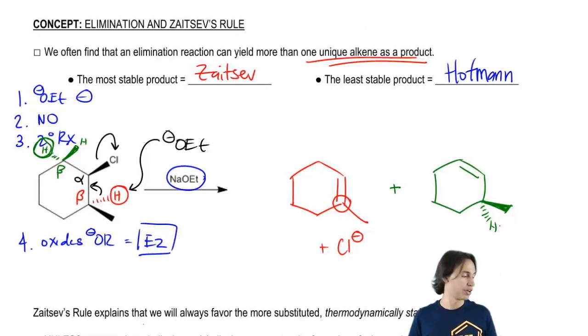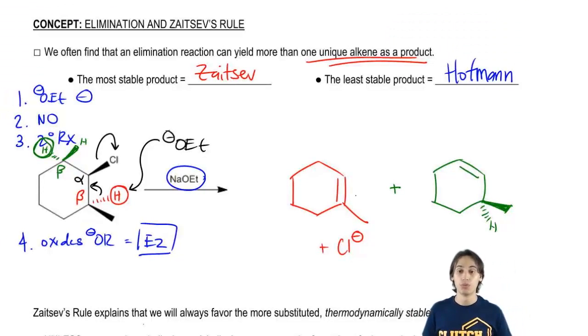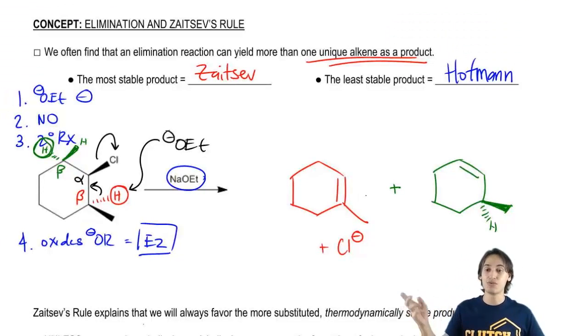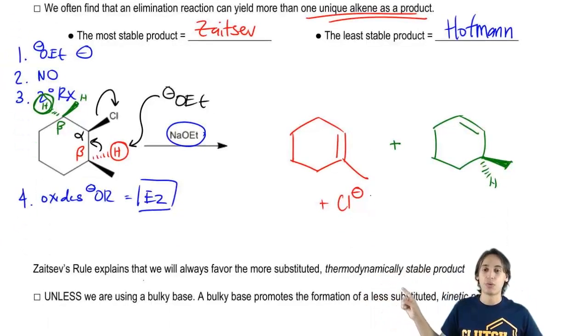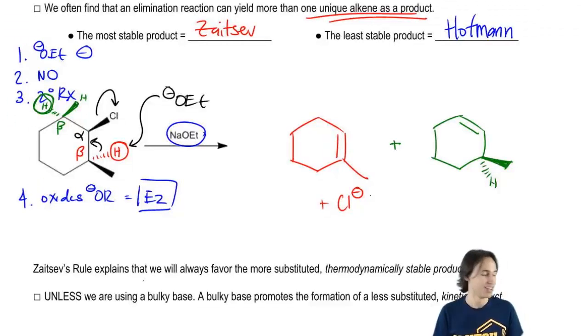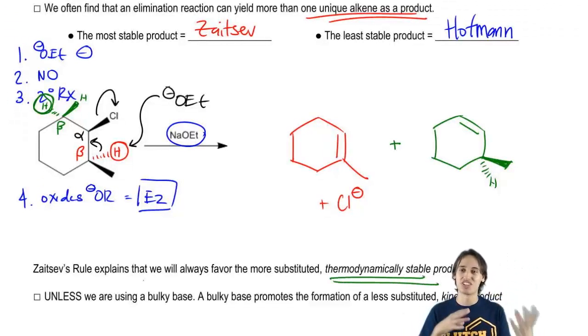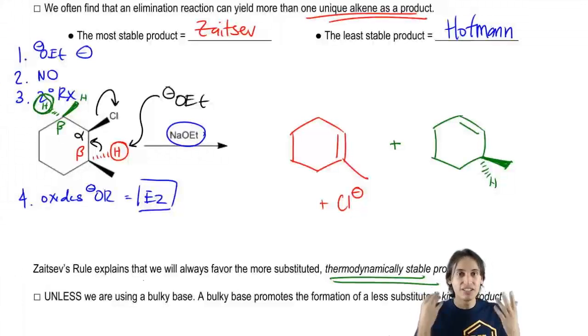Now we've drawn our two different products. Are they both going to be formed in equal amounts? No. Zaitsev's rule explains that we will always favor the more substituted, thermodynamically stable product. What does thermodynamically stable mean? I know that whenever you bring thermodynamics or kinetics, things get confusing. It just means which one's going to have the least energy—which one is the overall most stable at the end. But we know how to figure this out using the alkene stability rules.